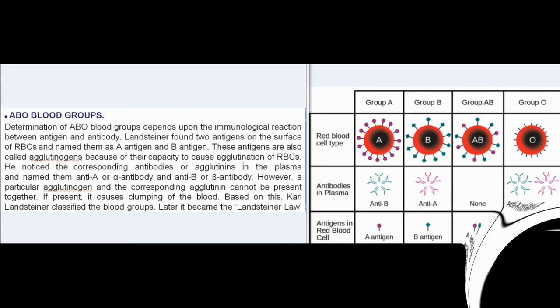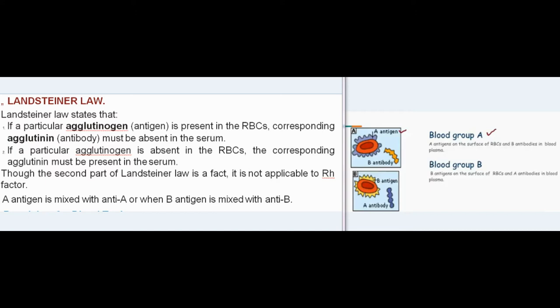Landsteiner Law: Karl Landsteiner classified blood groups based on this principle, which later became known as Landsteiner Law. It states that if a particular agglutinogen (antigen) is present in the RBCs, the corresponding agglutinin (antibody) must be absent in the serum. Conversely, if a particular agglutinogen is absent in the RBCs, the corresponding agglutinin must be present in the serum. Though the second part of the law is a fact, it is not applicable to the Rh factor.